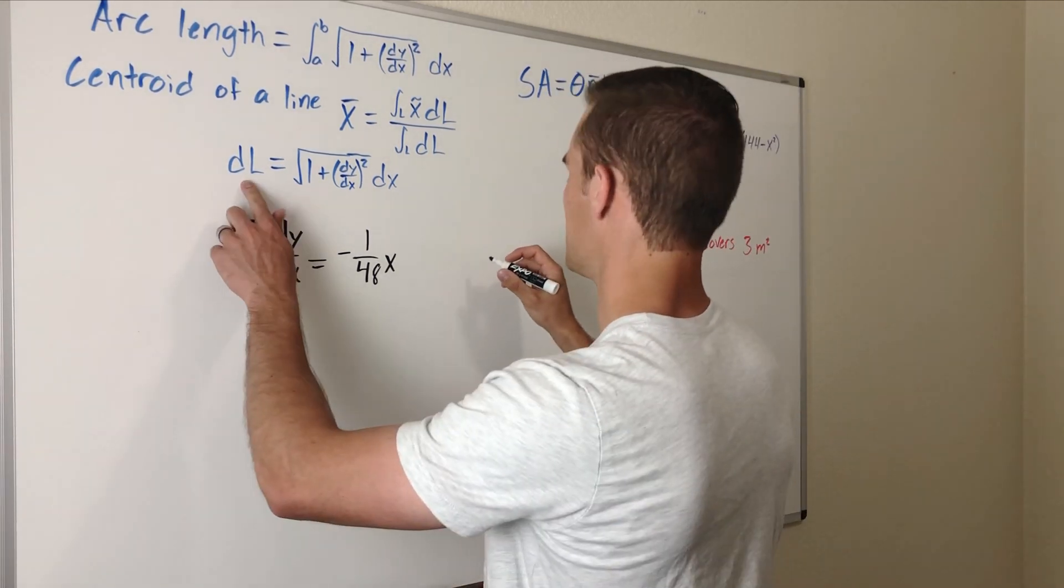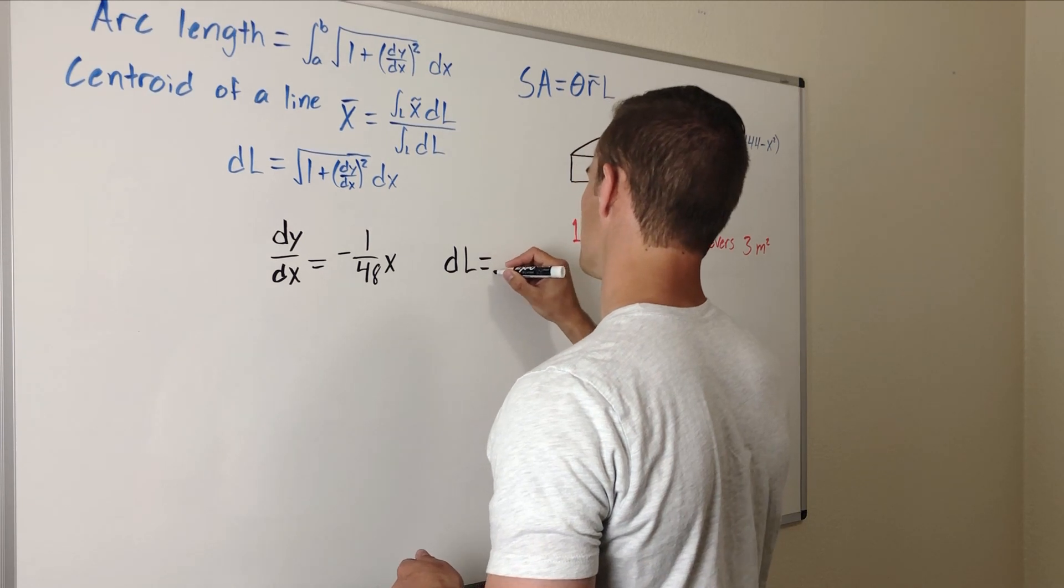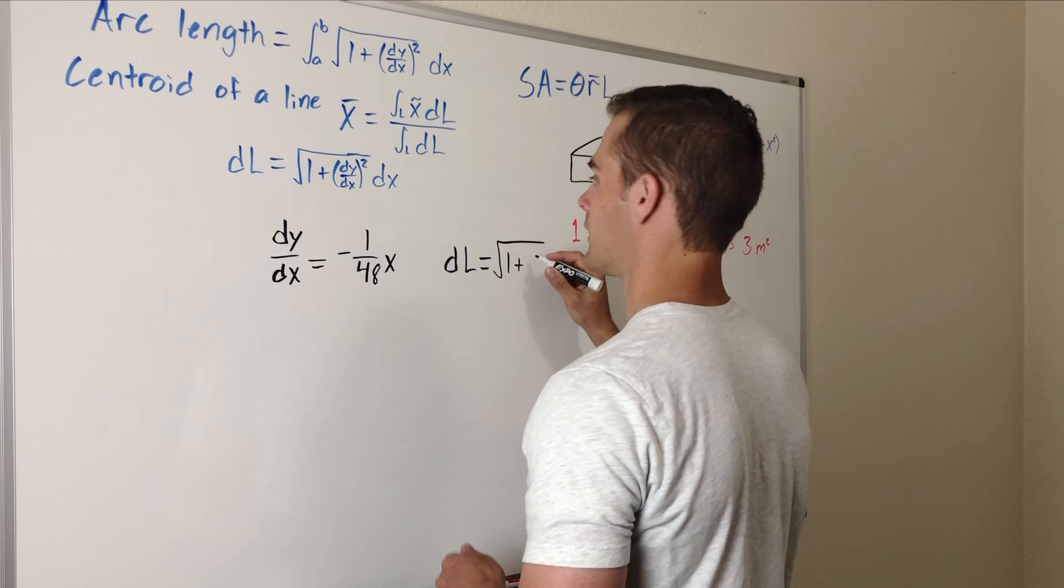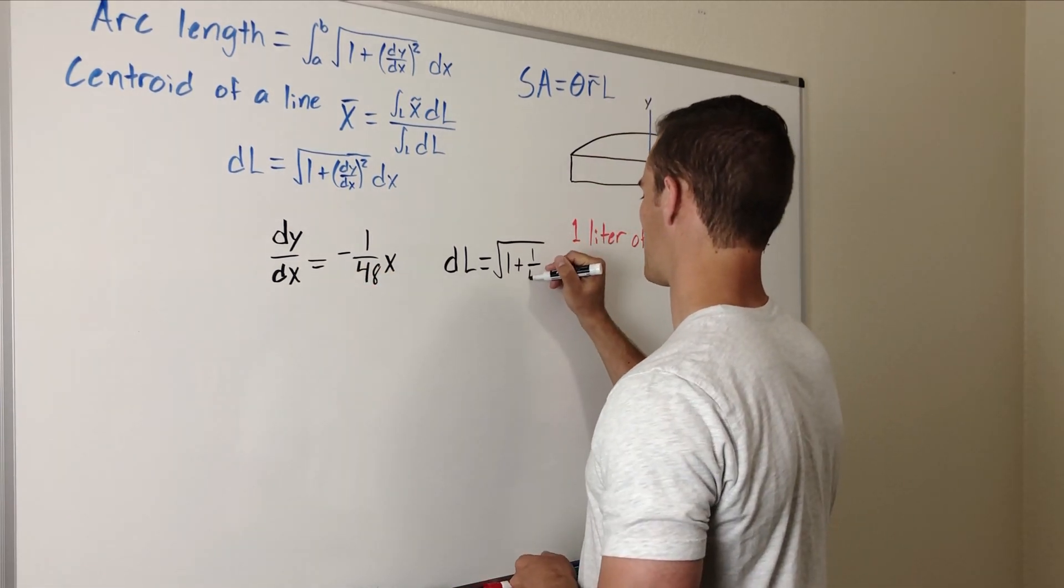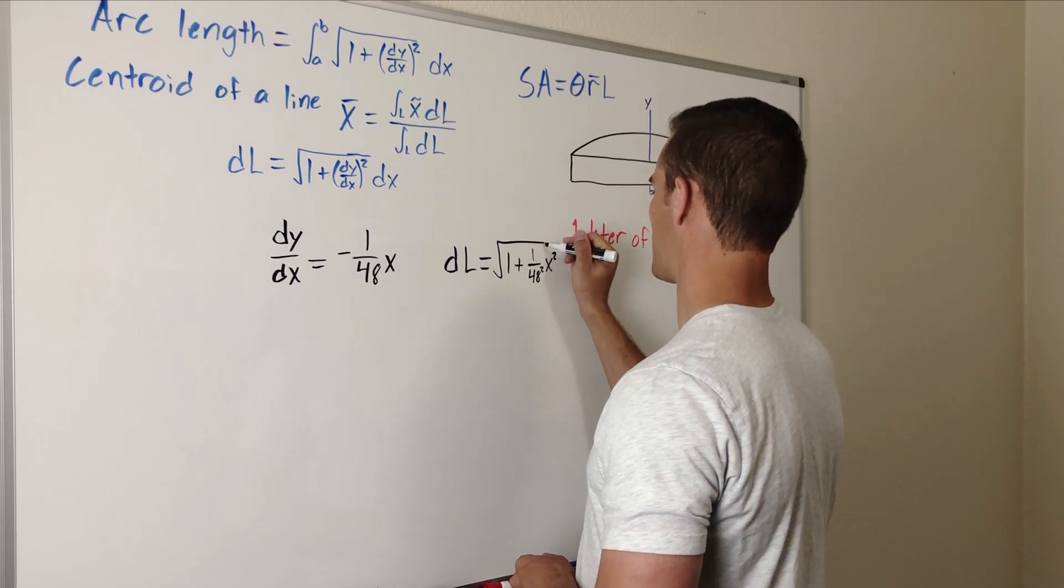Then plugging that into our equation for dL, we have that dL equals the square root of 1 plus, this squared. So that negative is going to drop out so that'll be 1 over 48 squared multiplied by x squared dx.